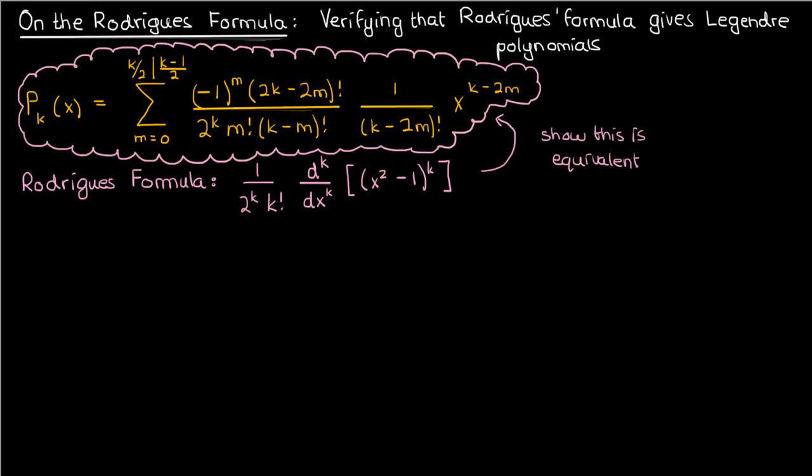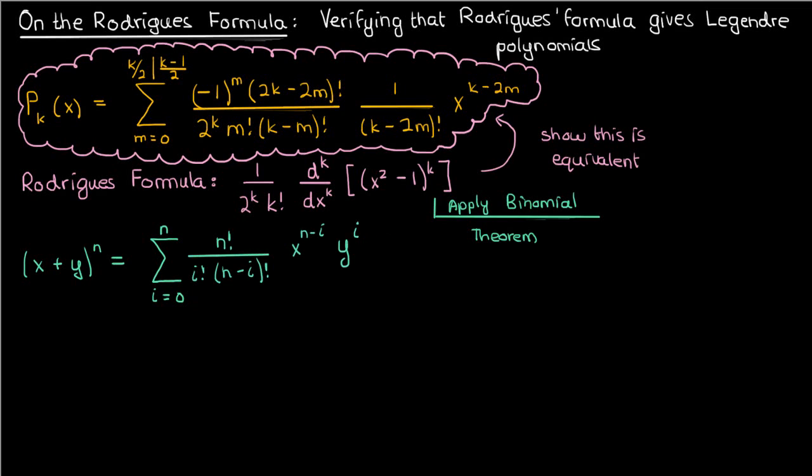To do this I'm going to start by applying the binomial theorem to this x squared minus 1 to the power k quantity. Recall that in the binomial theorem when you expand x plus y to the power n, you get the sum from i equals 0 to n of n factorial over i factorial times n minus i factorial times x to the power n minus i times y to the power i.